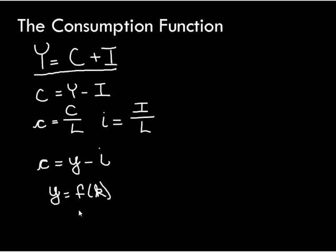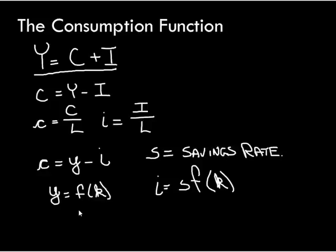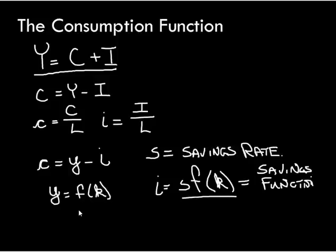Let's define another variable: s, the savings rate. S is the percentage of each unit of output that we save back and invest in capital. We can rewrite investment as: investment equals the savings rate times the amount of output we produce, or s times f of little k — which is actually the savings function. In equilibrium, savings equals investment, so we can rewrite per worker investment as s times f of little k.